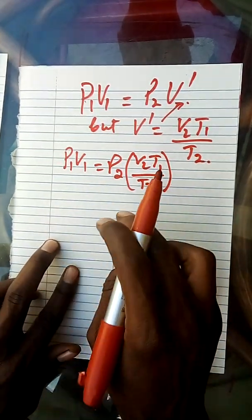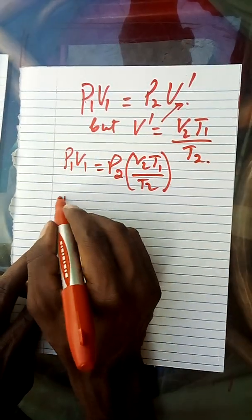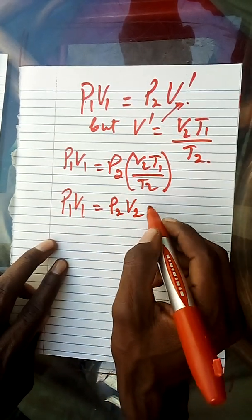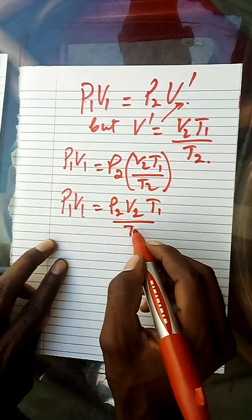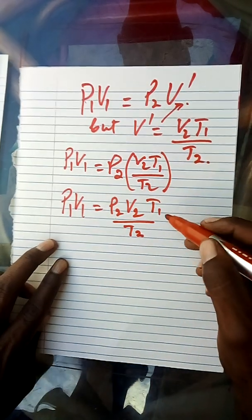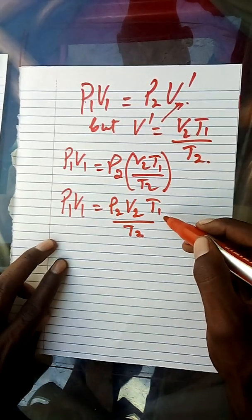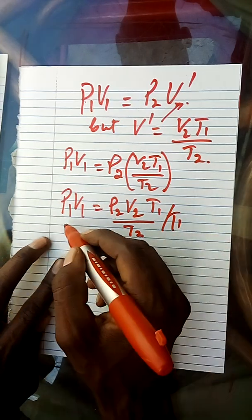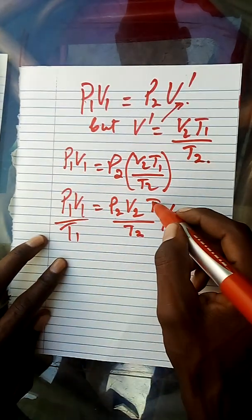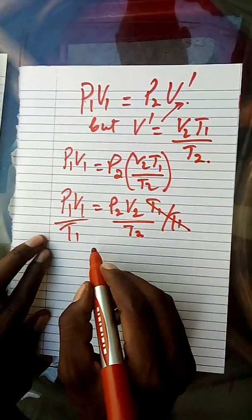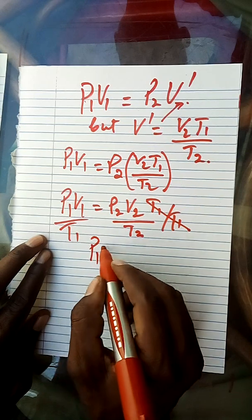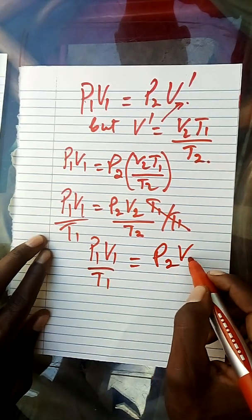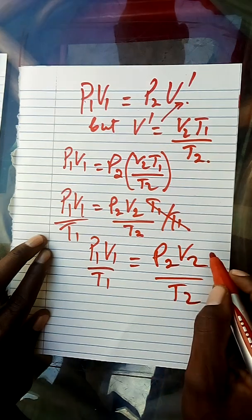Mathematically, once you open the bracket, you have P1 V1 is equal to P2 V2 times T1 over T2. Now we divide both sides by T1. Then T1 cancels, and you remain with P1 V1 over T1 is equal to P2 V2 over T2.